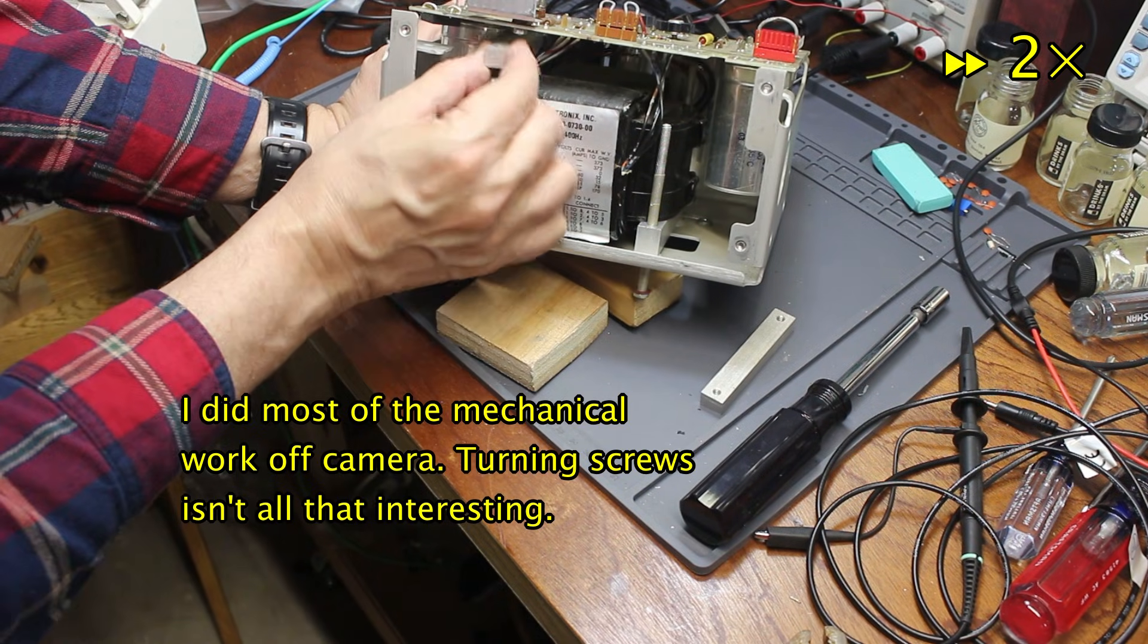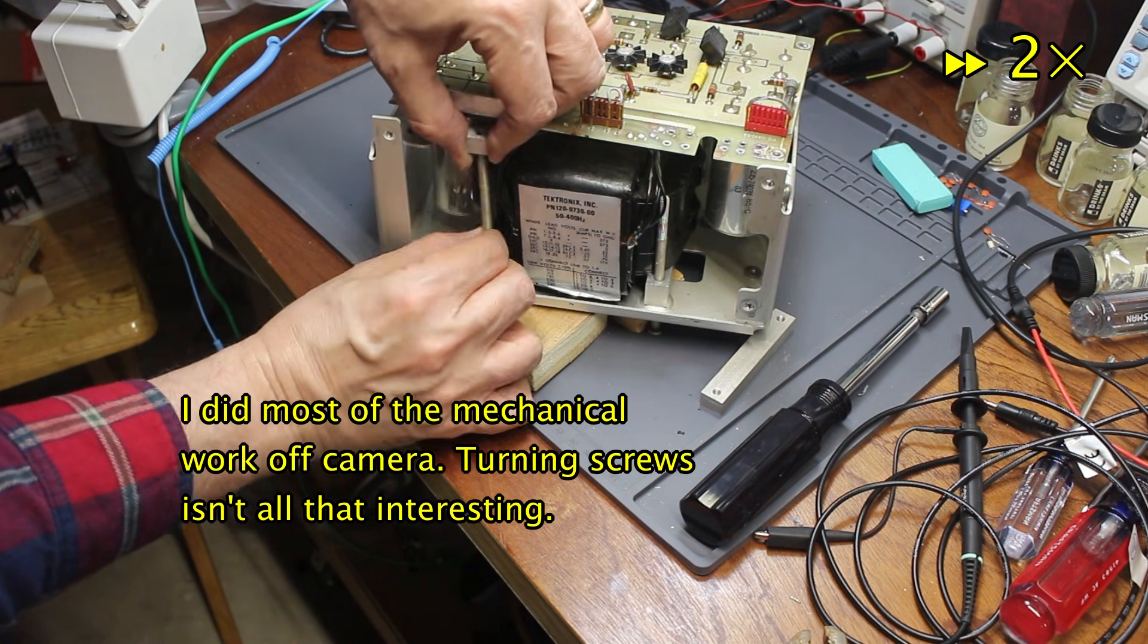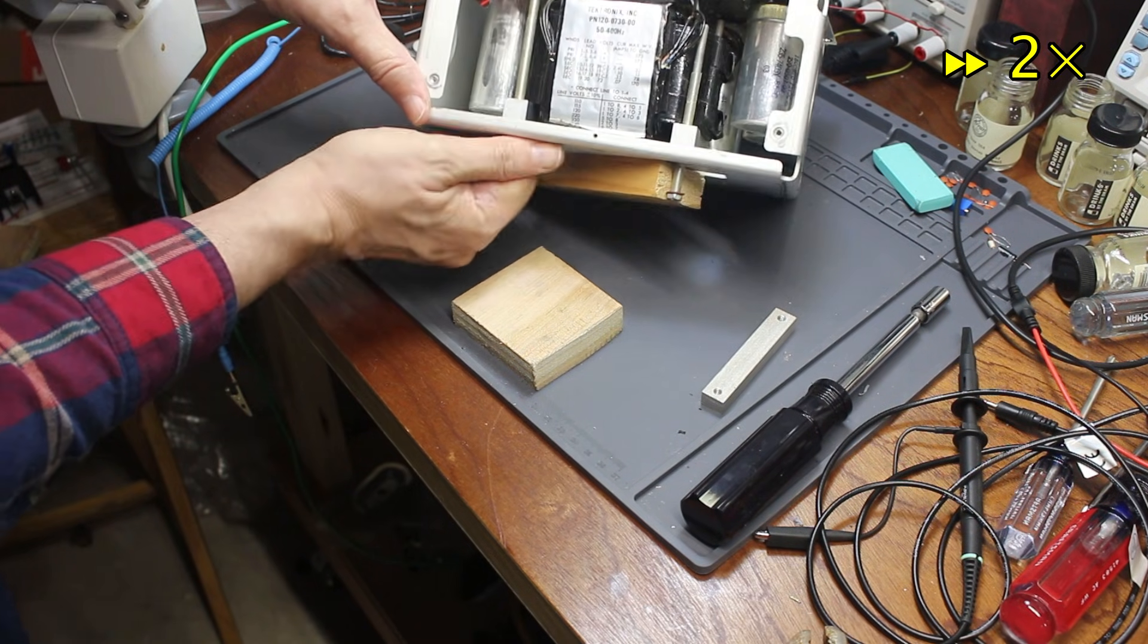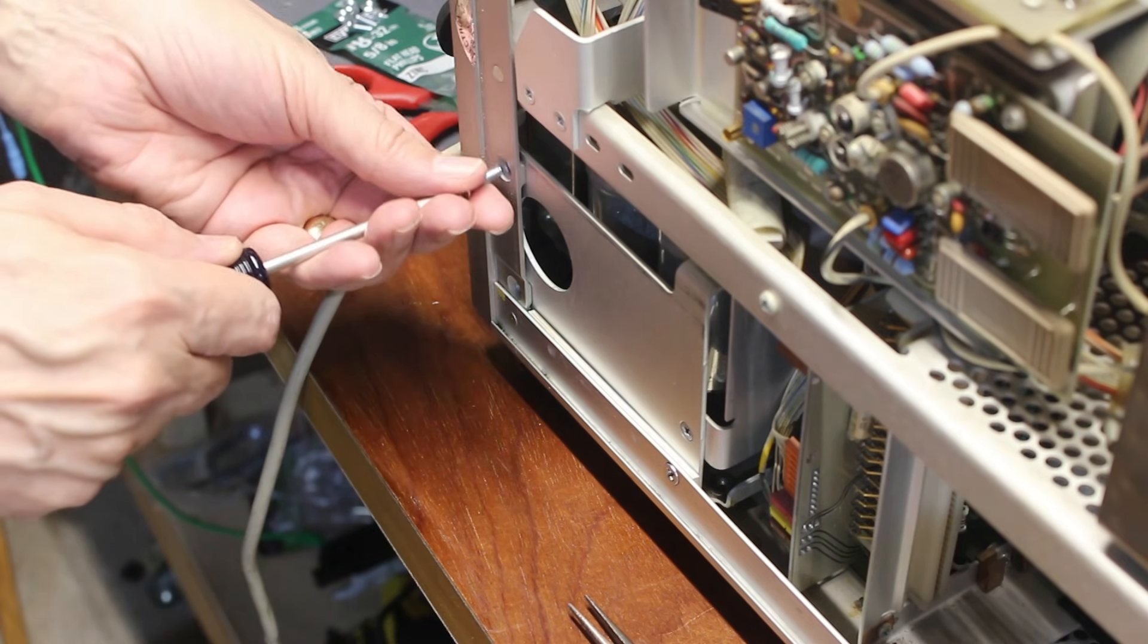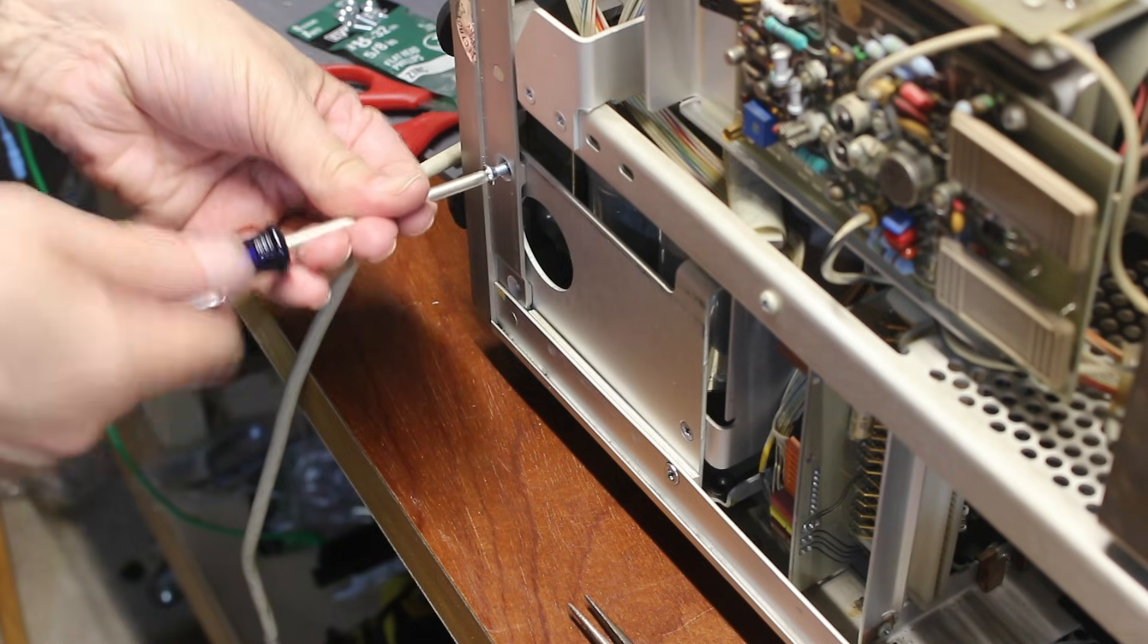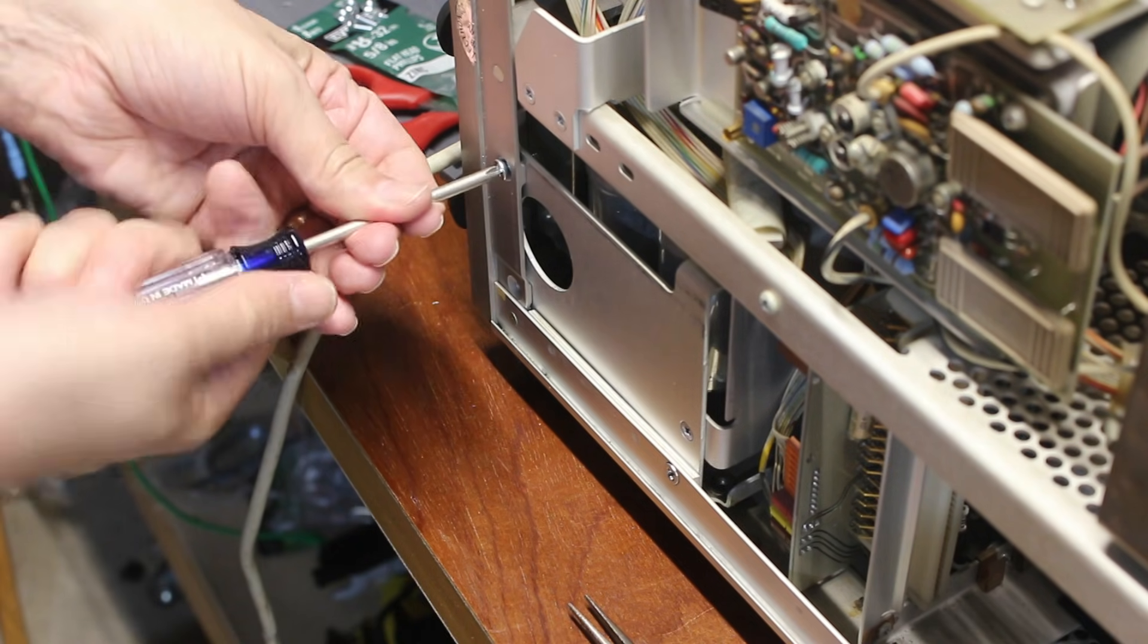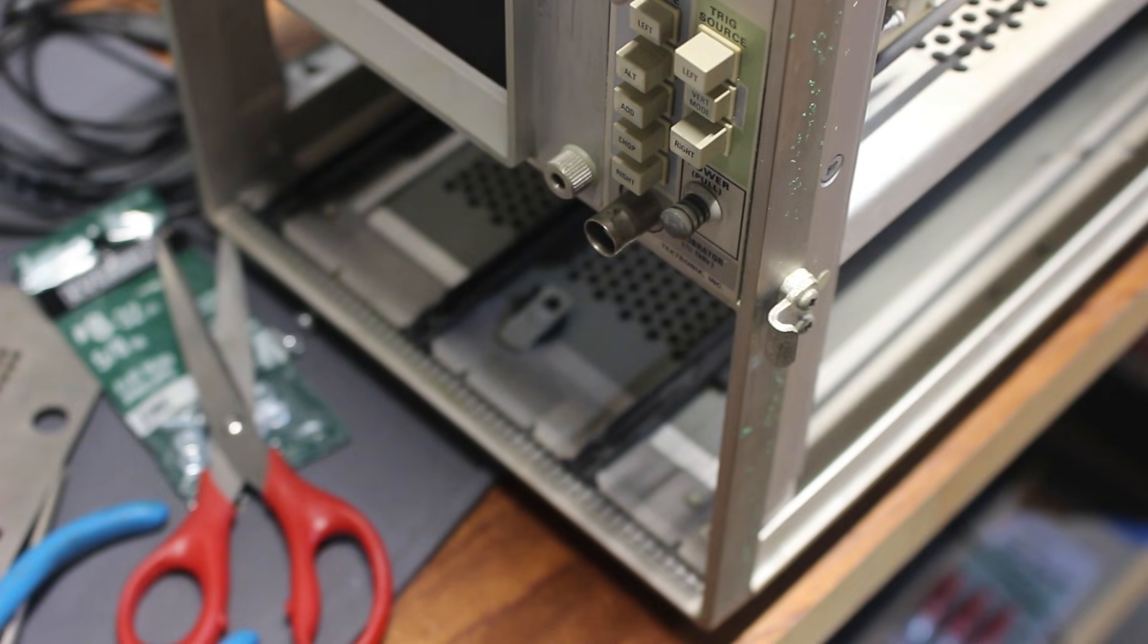I did all the mechanical reassembly, which included using a tap to chase all the threads that held the frozen screws. I replaced all the damaged screws with regular old Phillips-head screws from the hardware store, because I still haven't found a source for small quantities of Pozidriv screws in imperial sizes. I removed all the plug-ins, and now comes the moment of truth. Turn on the power, and start probing the test points.